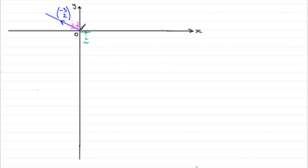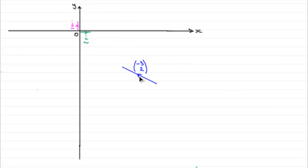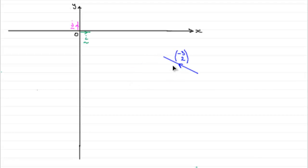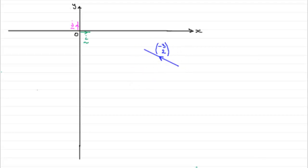Now this velocity vector is free to move — we can just move it around. It's still going to be three units back in the i direction and two units up. So that's our vector; let's just put it there for the moment.